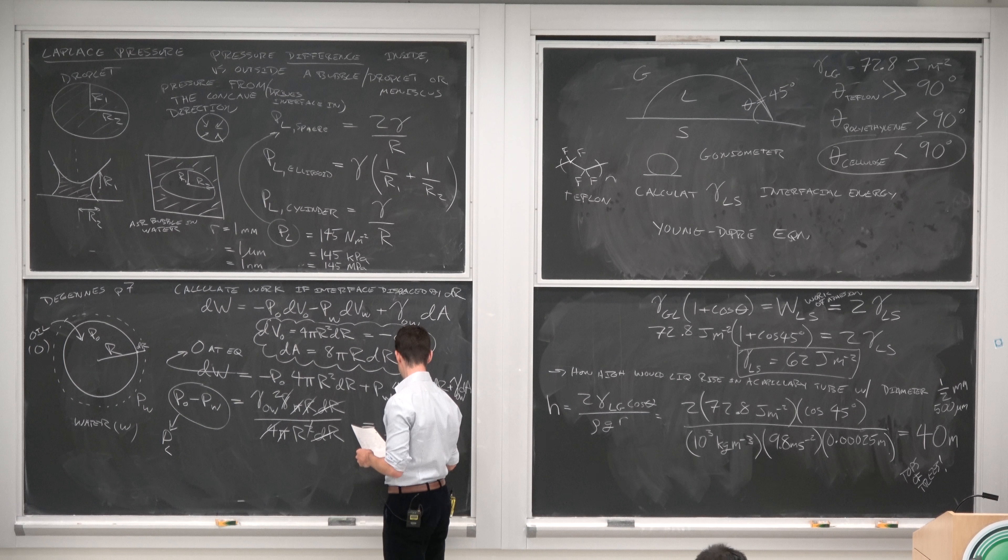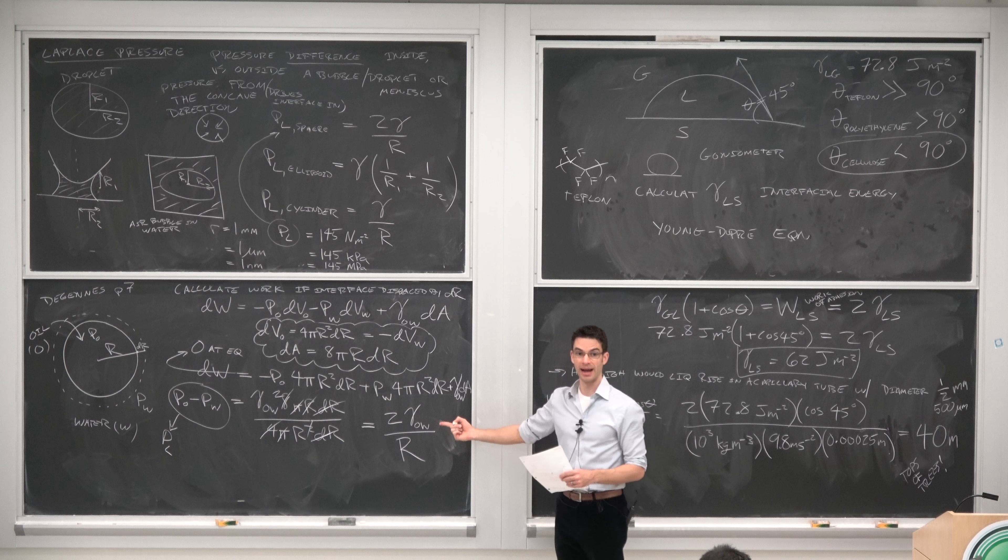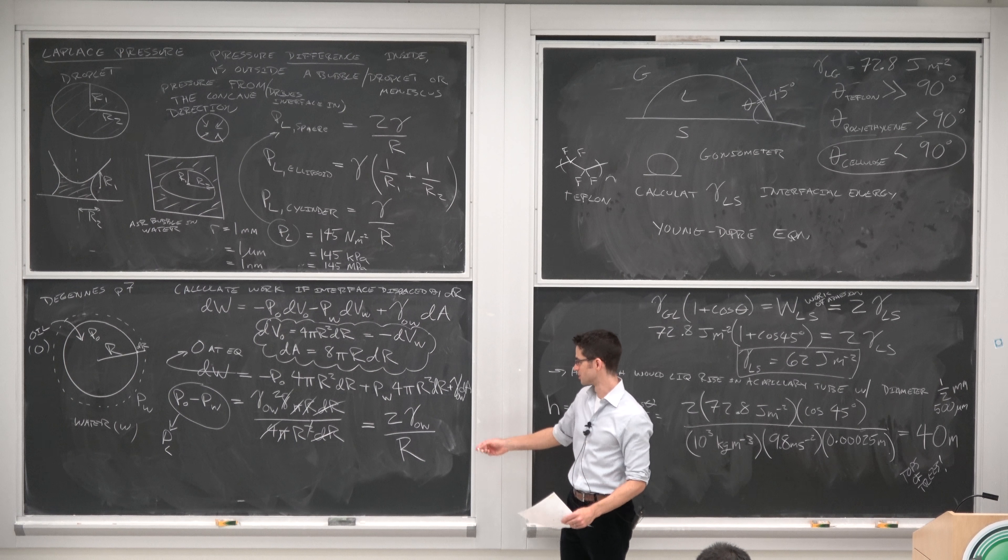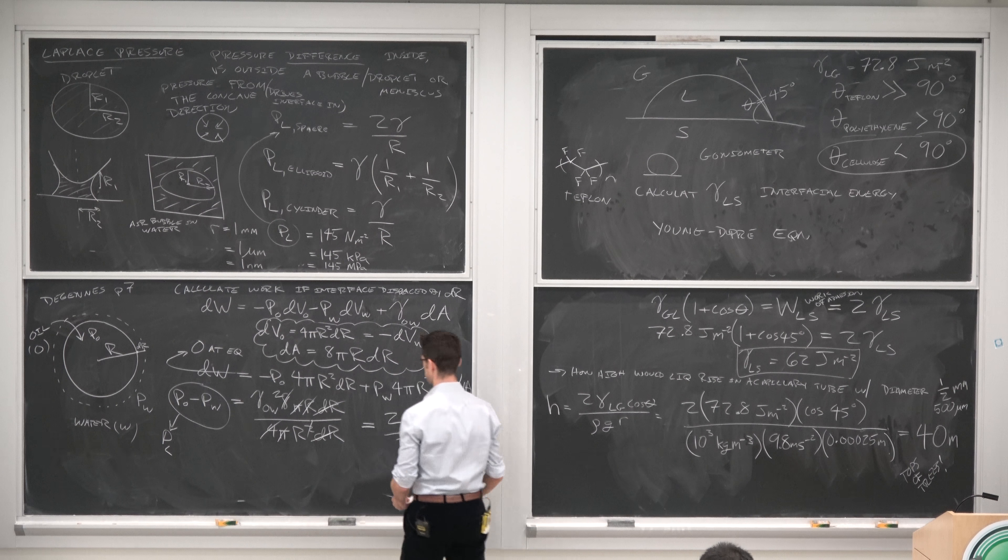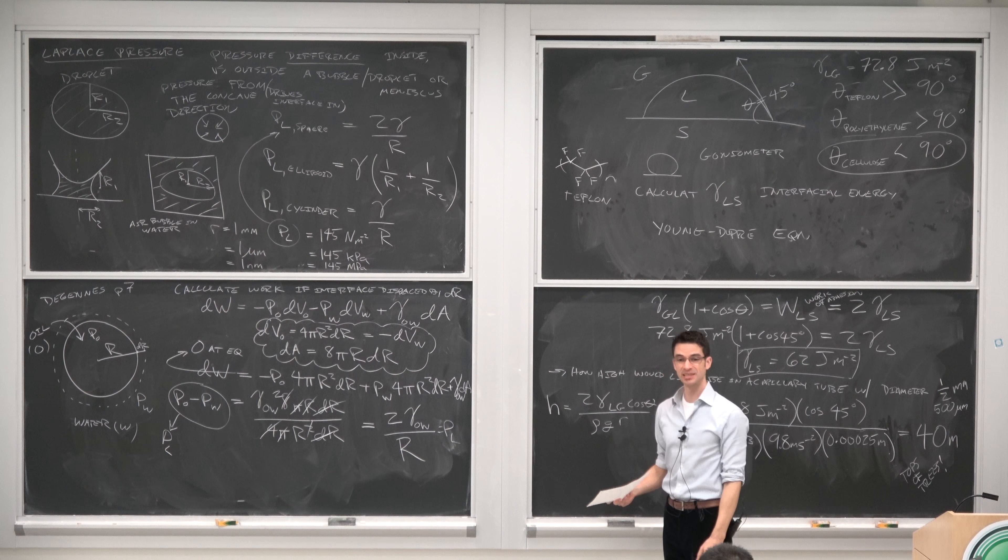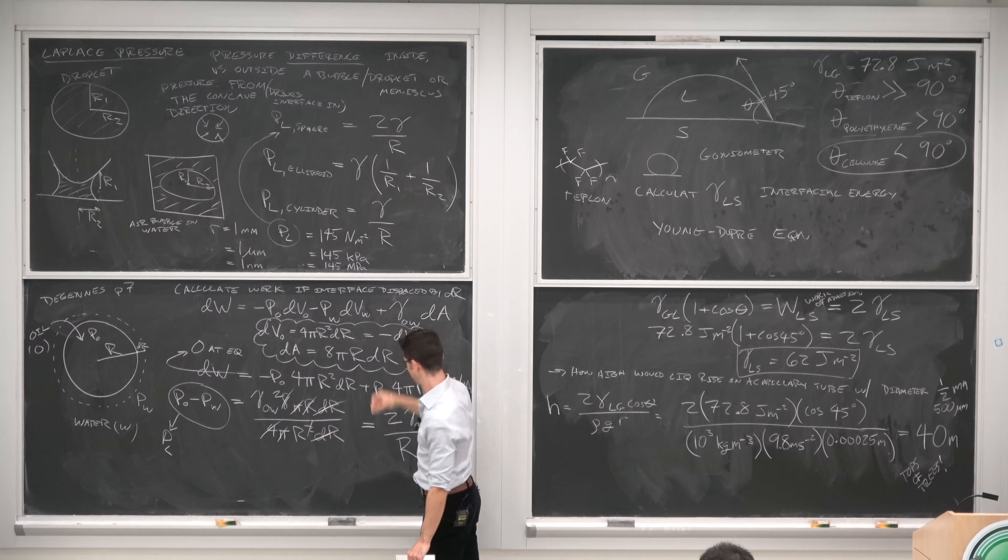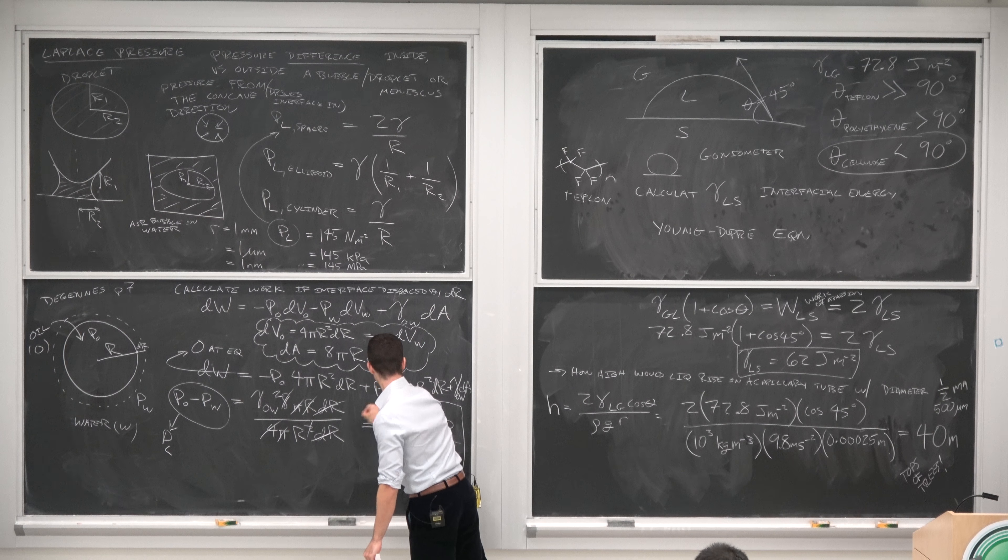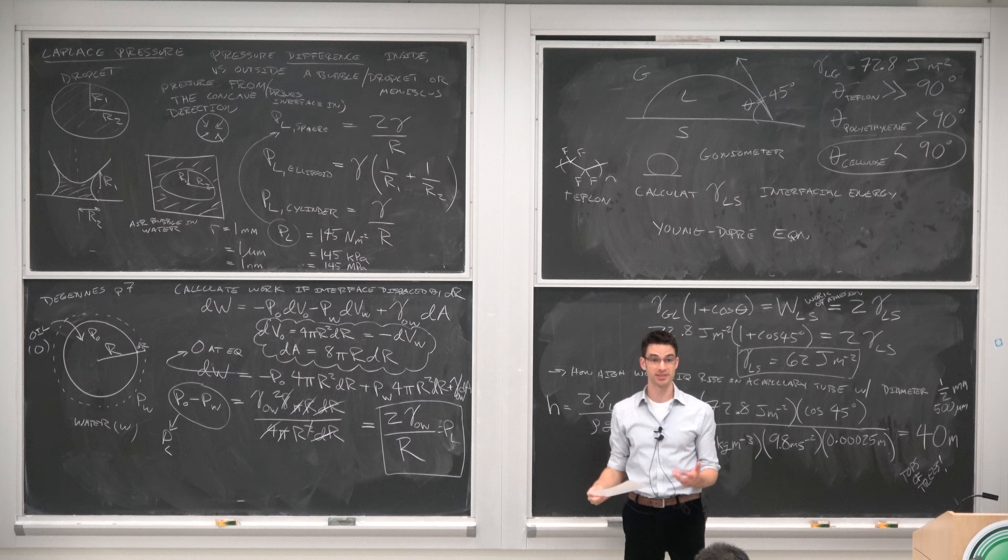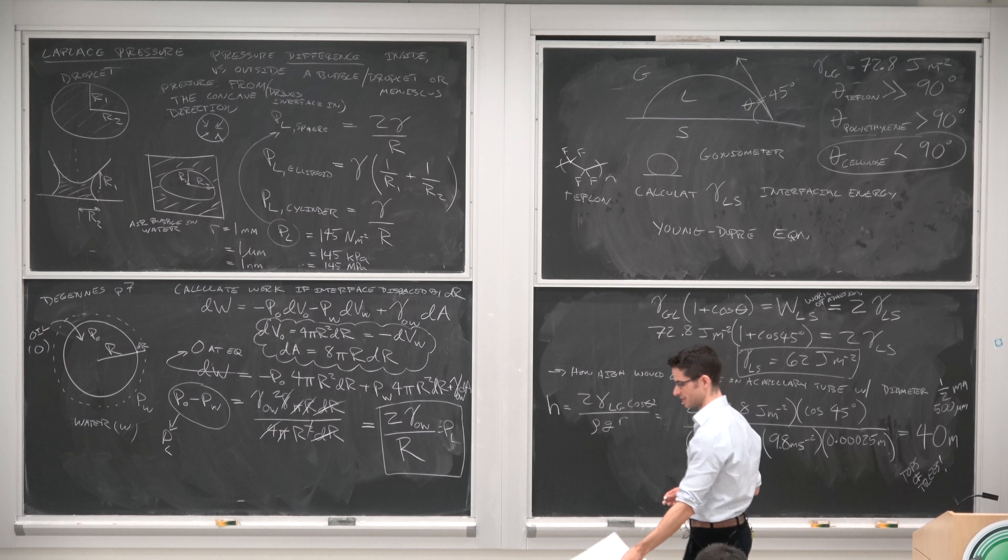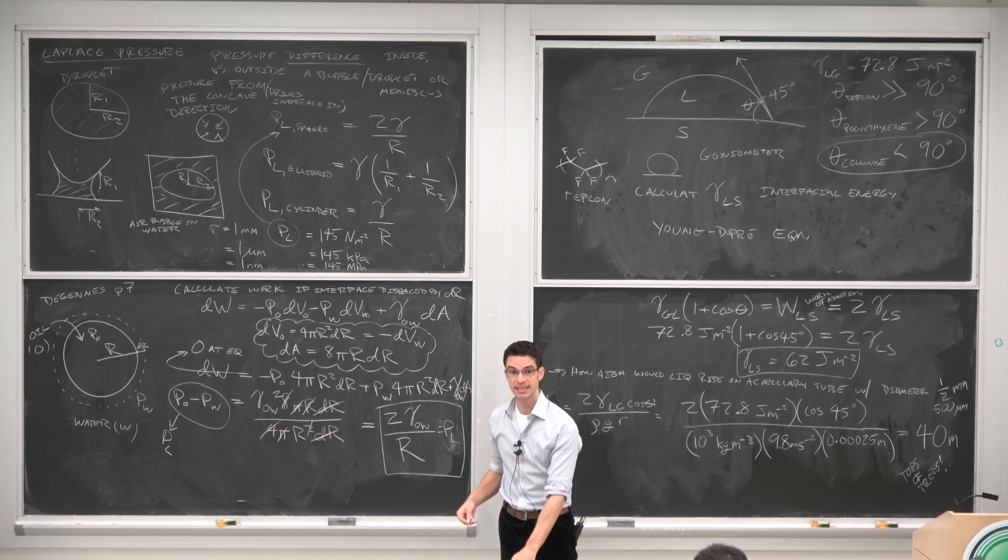And this is why I prefer writing with chalk instead of a whiteboard, because you can cancel terms like Zorro. It's the whole reason I wanted to be a professor, so I could do that. And we have 2 gamma O over R equals PL. And you can make a similar geometric argument for cylinders and ellipsoidal geometries, but we're not going to do it for the sake of everybody's sanity.